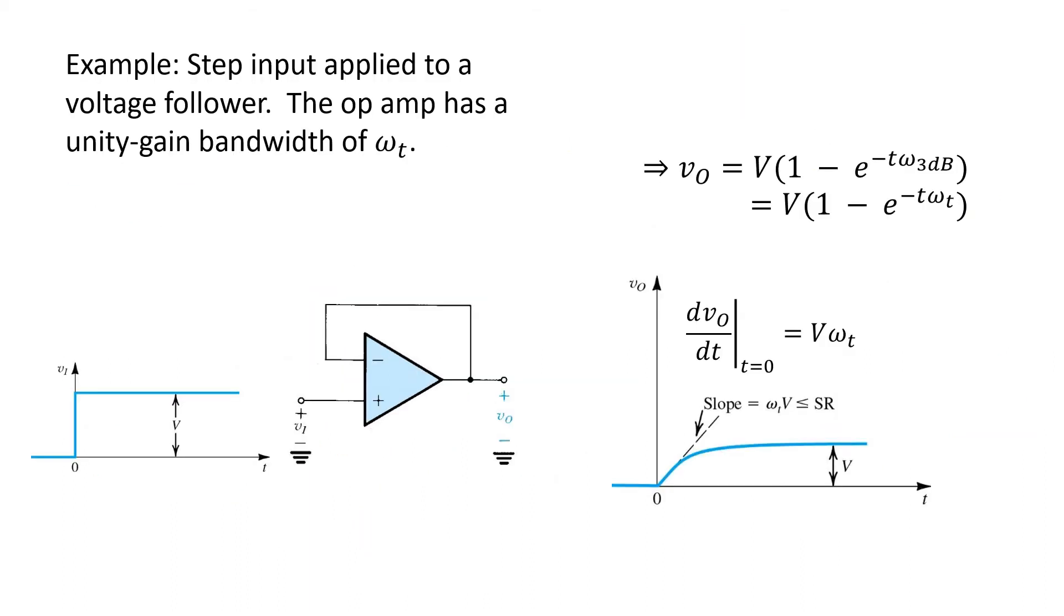One final large signal non-ideality of op-amps arises when we try to force it to change its output voltage very rapidly. And again, this is best illustrated by way of example. Let's consider this simple unity gain voltage follower here with an ideal step input applied with an amplitude of V volts at the input.